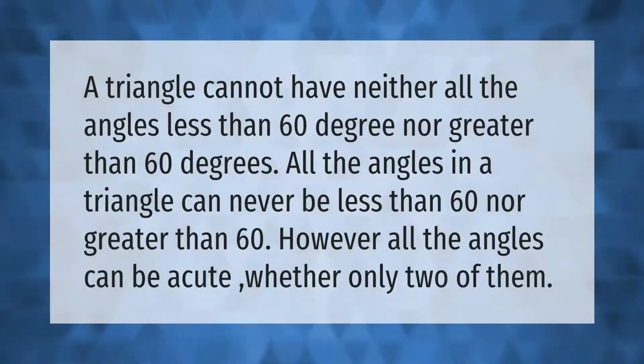A triangle cannot have all angles less than 60 degrees, nor can it have all angles greater than 60 degrees. All the angles in a triangle can never be less than 60 nor greater than 60.